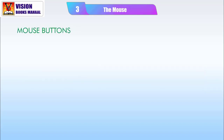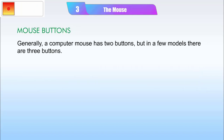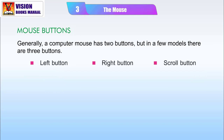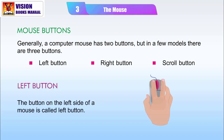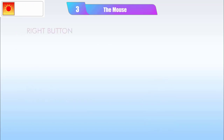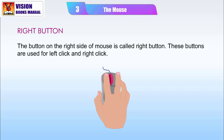Mouse Buttons. Generally, a computer mouse has two buttons, but in a few models there are three buttons. The button on the left side of a mouse is called the Left Button. The button on the right side of a mouse is called the Right Button. These buttons are used for left click and right click.